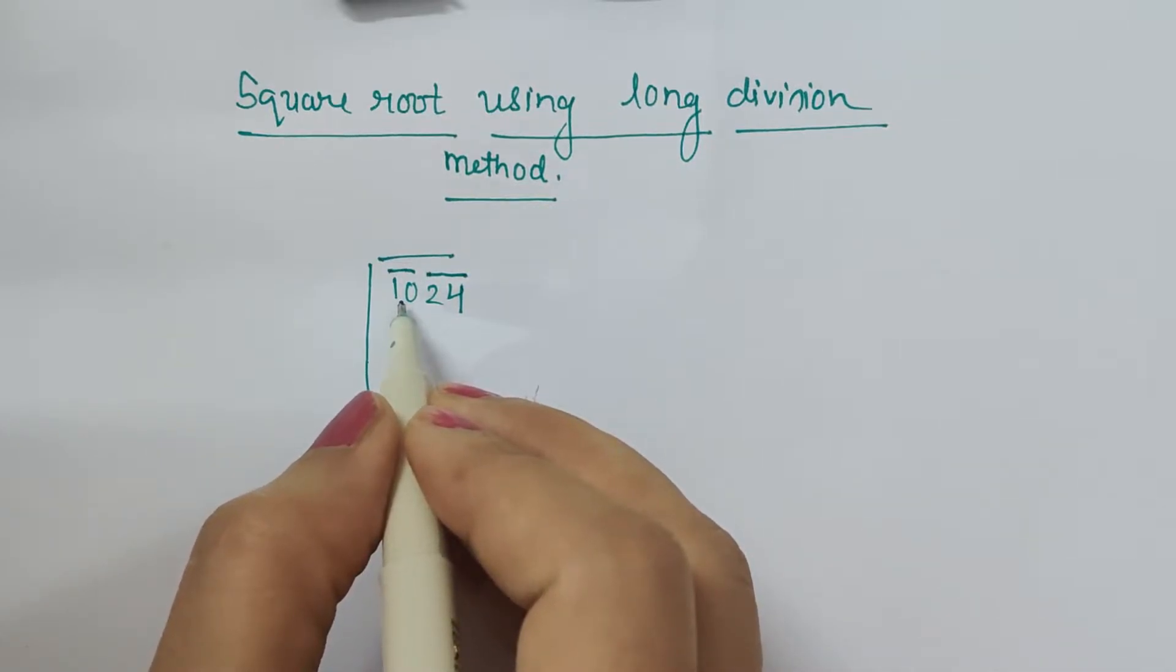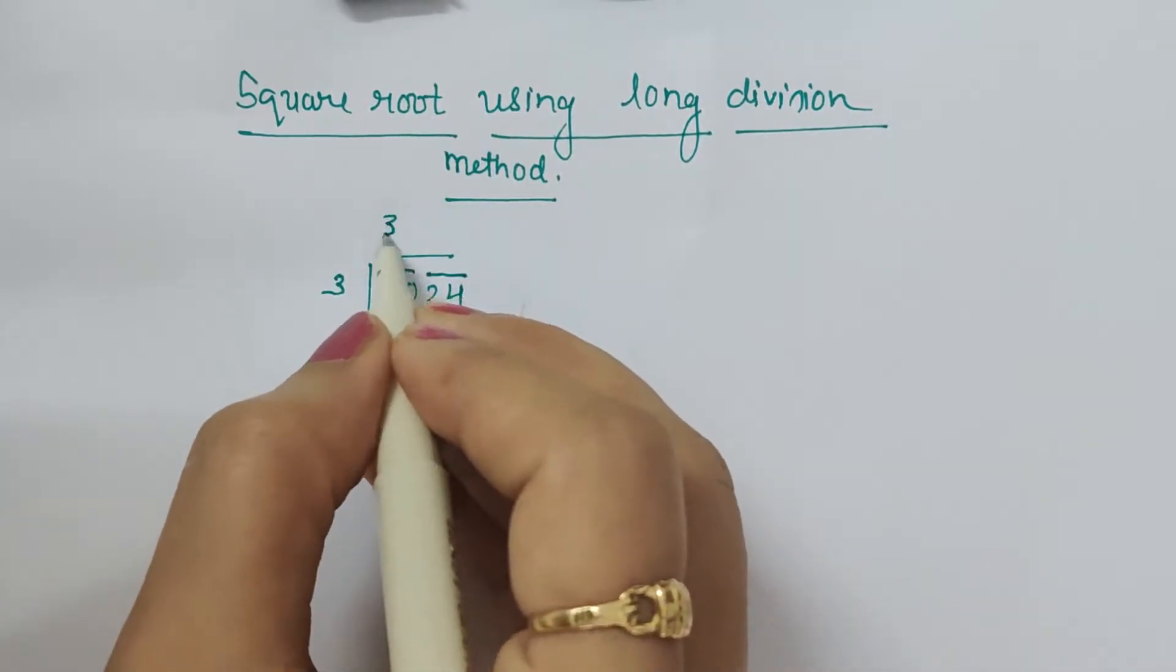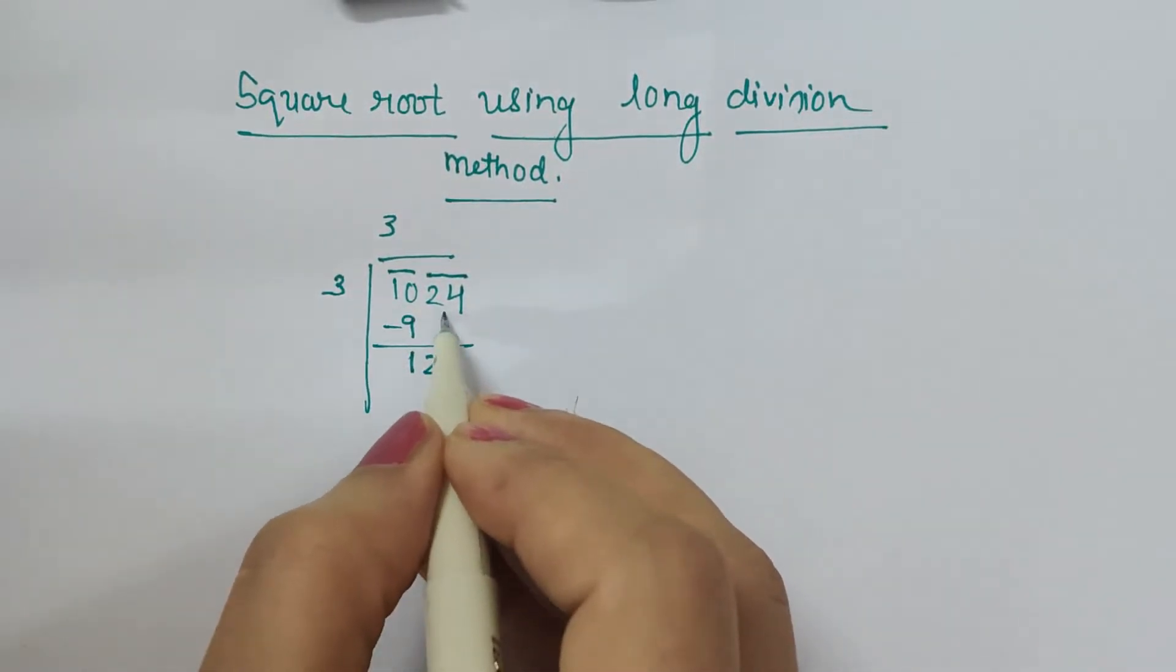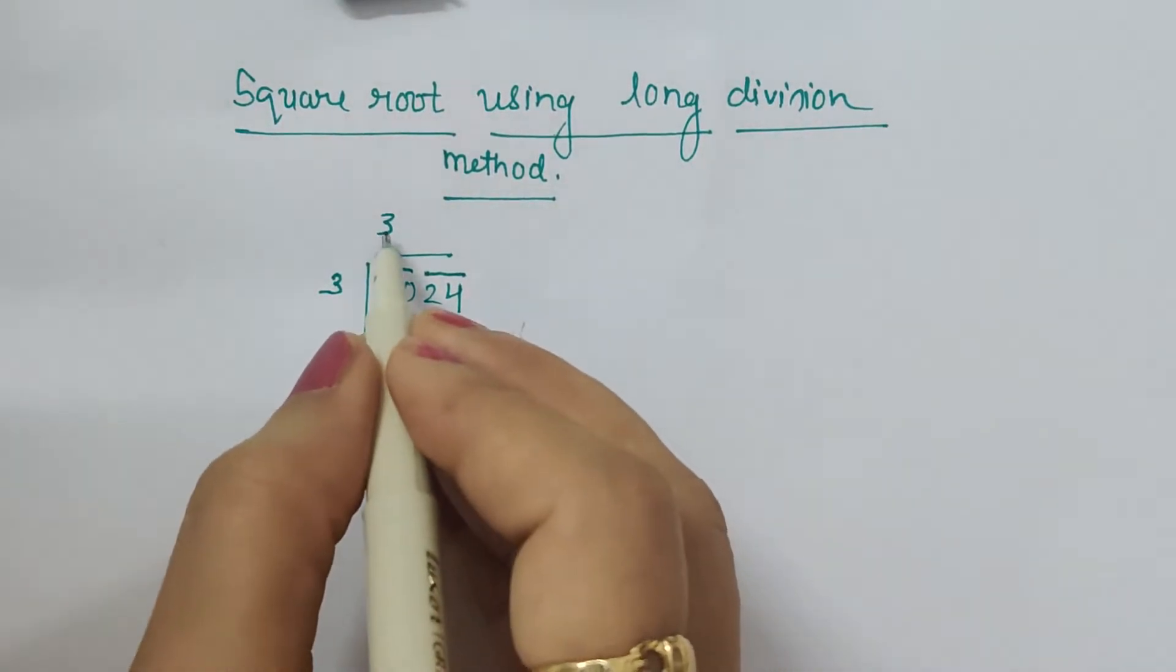We don't have any equal perfect square, so just less value perfect square is 9, which is 3×3. Now the remainder is 1. We bring 24 together downward, and then whatever value is here it will double this value.